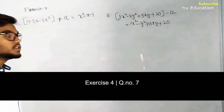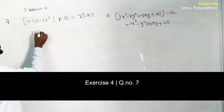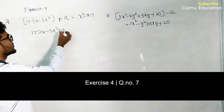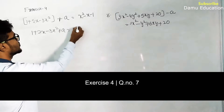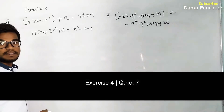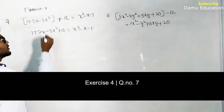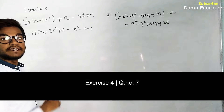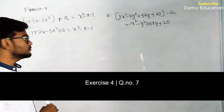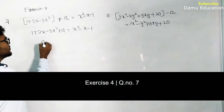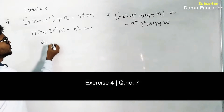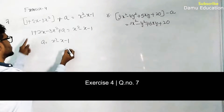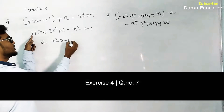So 1 + 2x - 3x² + a = x² - x - 1. We shift all the terms to the right side to get the required term a. So a = x² - x - 1 minus (1 + 2x - 3x²), which means 1 becomes -1, +2x becomes -2x, and -3x² becomes +3x².